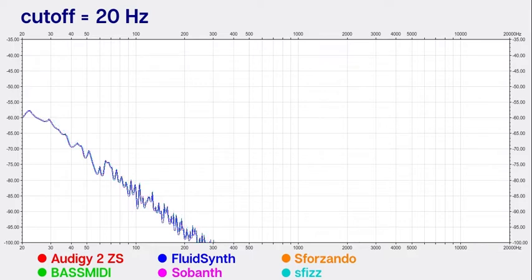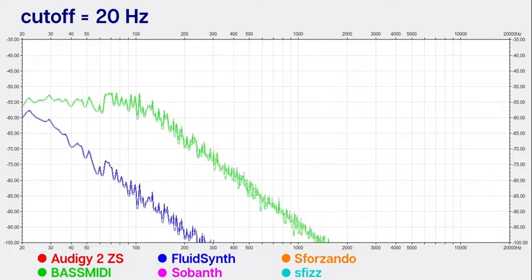Hiding SFZ and focusing just on two prominent sound font synths, FluidSynth and BASSMIDI, you can already see an enormous difference at 20 Hertz. This is because BASSMIDI does not support lower than 100 Hertz cutoff frequency.